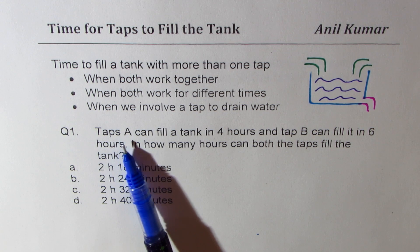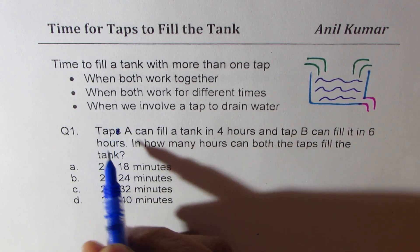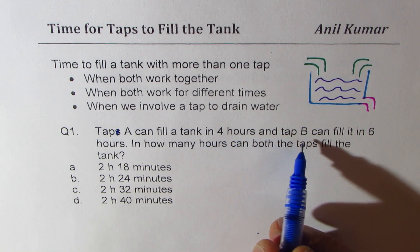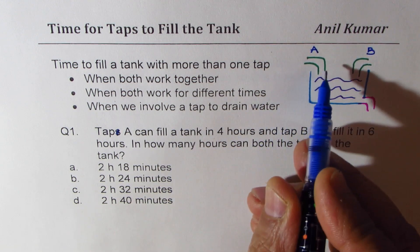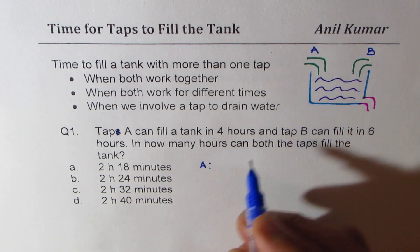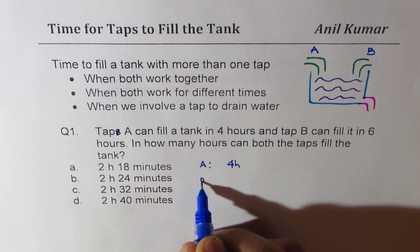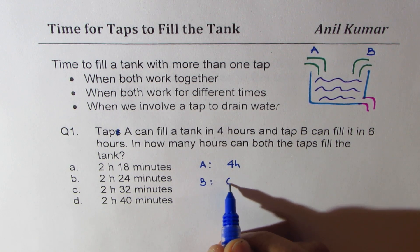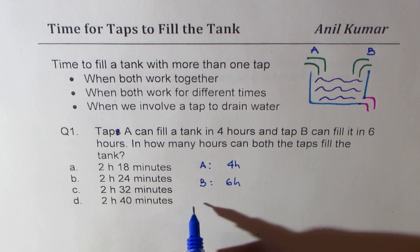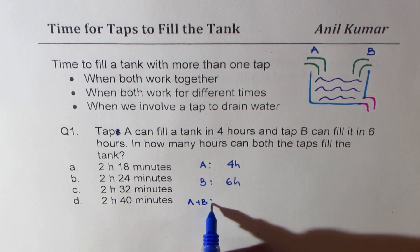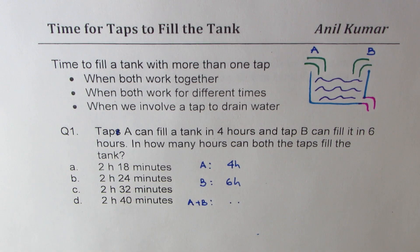Let's begin with the first question. Tap A can fill a tank in four hours and Tap B can fill it in six hours. In how many hours can both taps fill the tank if switched on together? This is a very common question, and now we'll learn a method to find the solution very fast.